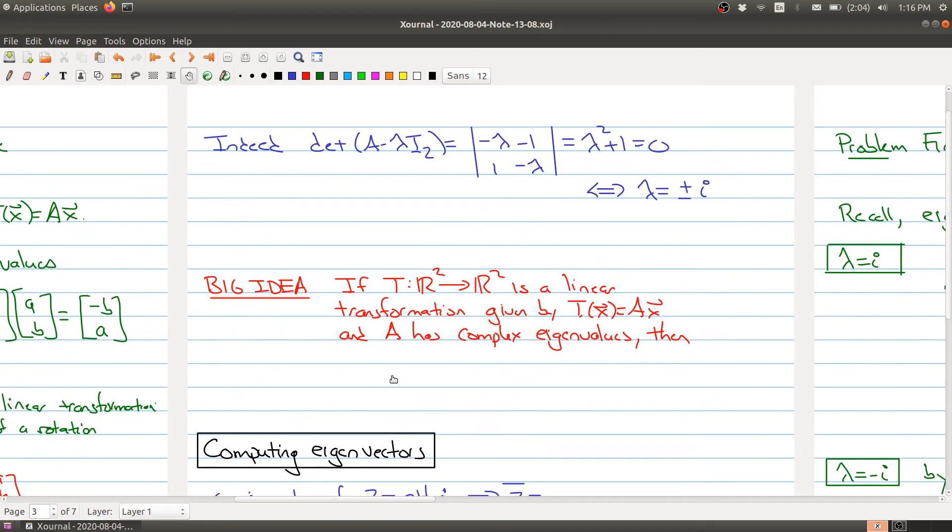The big idea you should take away from today's lectures on complex eigenvalues is that if you have a linear transformation given by multiplying by a matrix A and A has complex eigenvalues, then what you can think about is that T corresponds to a rotation. So somehow complex eigenvalues correspond to rotating points. That's the geometric point of view. And we're going to dive deeply into this in more detail as we go into the next couple parts of our lectures.